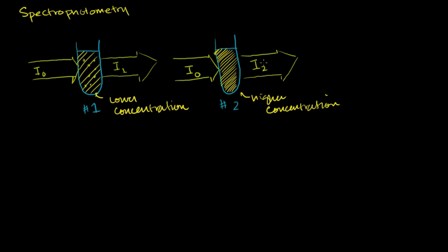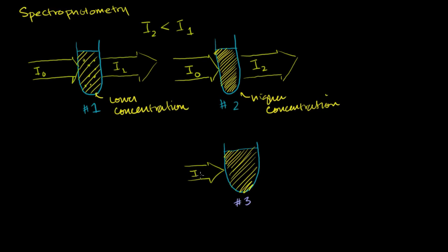I2 is going to have a lower intensity of light being transmitted than I1. If you have another beaker that is maybe twice as wide, and it has the same concentration as number two — we'll call this number three — if you were to shine the same light in here, you'd have some light I3 that exits. It's the same concentration, but this light has to travel a further distance through that concentration. So it's going to bump into more molecules, and more of it will be absorbed, so less light will be transmitted. I2 is less than I1, and I3 is actually going to be the least.